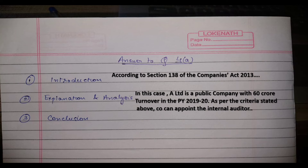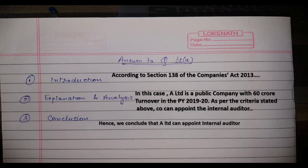When the examiner checks, the bifurcation of paragraphs should be clearly visible, so that he or she knows you understand the section, the subsections, and the clauses you have applied, and whether your conclusion is correct. Lastly, for the conclusion: 'Hence, we conclude that A Limited is required to appoint an internal auditor as per Section 138 of the Companies Act.' Plain and simple.